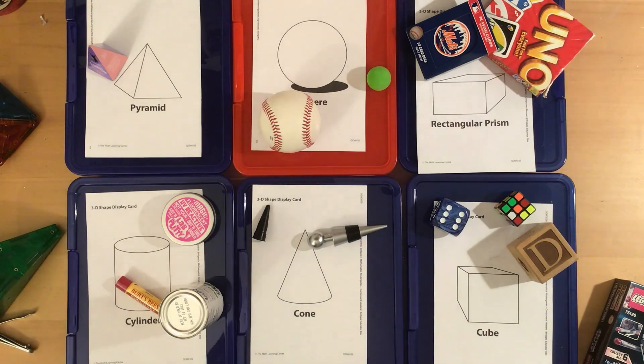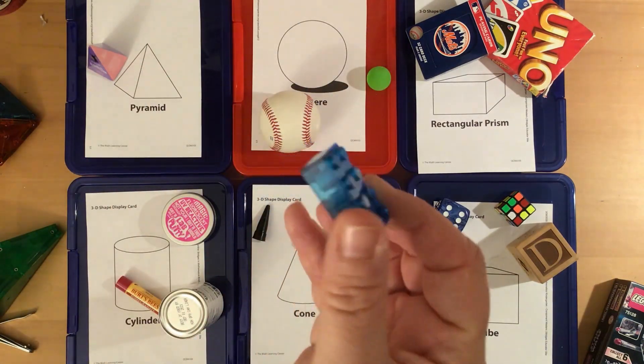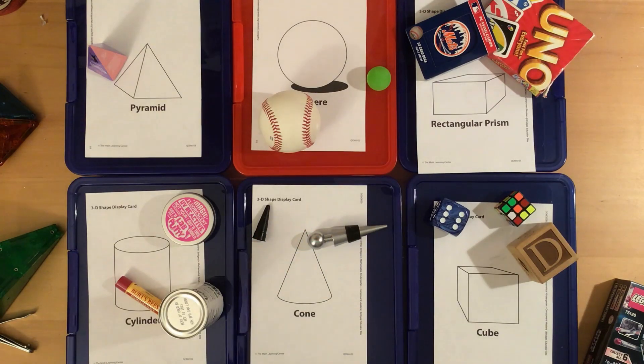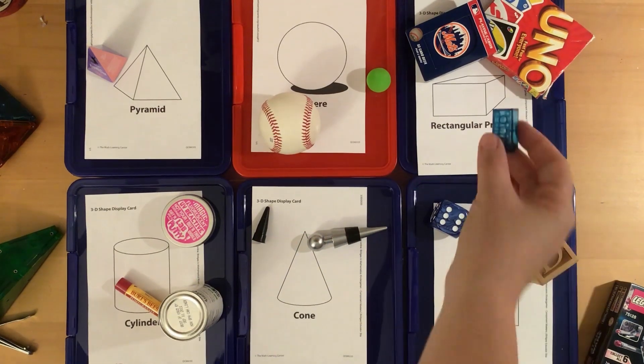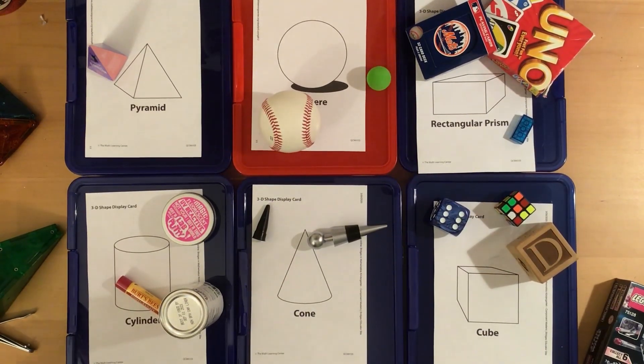So first I found this. It's a little Lego piece. Where should that go? Can you point to the right spot? You're right. It's going to go over here with the rectangular prisms. Let's see what else I can find.